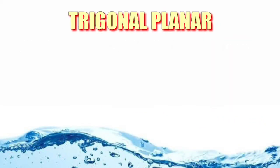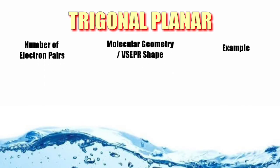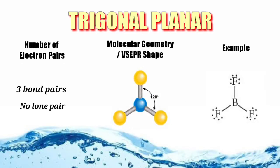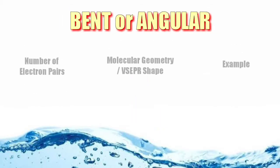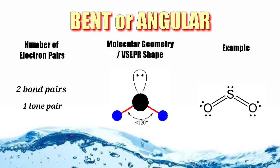Next is the trigonal planar. This is the shape of the molecules formed when there are three electron pairs bonded to the central atom and the central atom has no lone pair. The geometric shape formed is called bent.